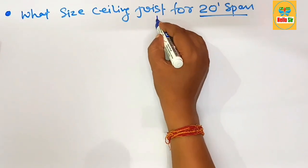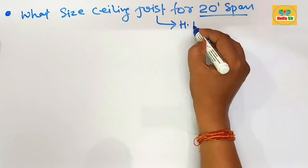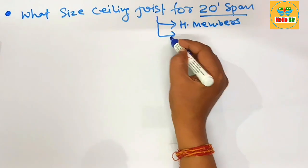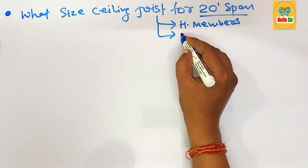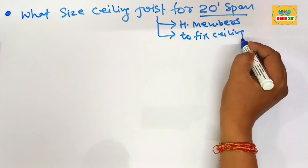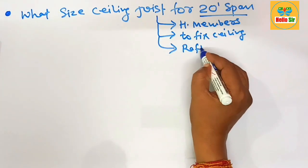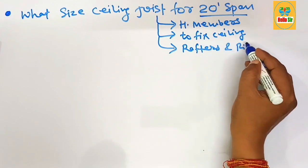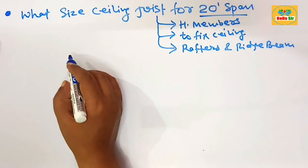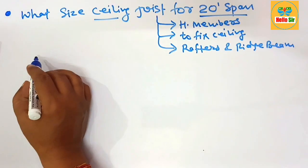First, you should know what a ceiling joist is. It is a horizontal member in a roof framing system. It provides structure to fix the ceiling and provides support to roof rafters and the ridge beam.